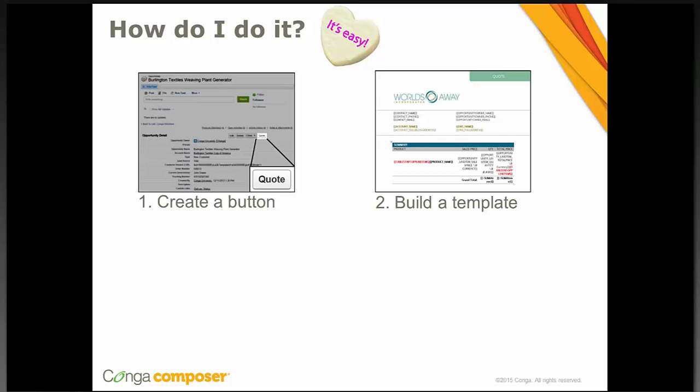We have templates pre-built for you that you can select from on our support website, and I will give you that resource a little later on. The picture you see here is one of our pre-built templates — they look really nice and there is a whole variety to choose from in a variety of formats. You could also start from scratch or customize a pre-built template, and the template builder, accessed from the Composer button, is a very powerful tool to help with template development. Today we're focusing more on the configuration of a quote solution rather than building the templates, but I can point out what this template looks like and where you would go to build your own.